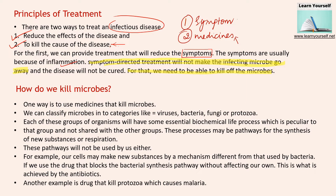Now, talking about the medicine that will take care of the microbial count — how do we kill the microbes? One way is to use medicine that will kill the microbes. We can classify microbes into categories like virus, bacteria, fungi, and protozoa. As the microbes vary, their mode of treatment will also vary because we are targeting their biochemical pathways, and based on that our medicine will also vary. Each group of organisms has some essential biochemical life processes peculiar to that group, not shared with others — pathways for synthesis of new substances or respiration.